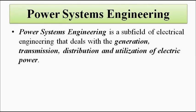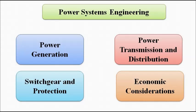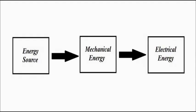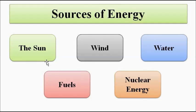Power systems engineering deals with the generation, transmission, distribution, and utilization of electrical power along with protection and economic considerations — these are the four main aspects. The basic principle involves first converting the primary energy source, be it the Sun, wind, water, fuels, or nuclear energy, into mechanical energy and then into electrical energy with a suitable mechanism. The various sources of energy considered for generation are mainly the Sun, wind, water, fuels, and nuclear energy.